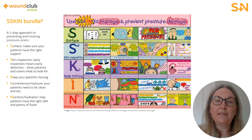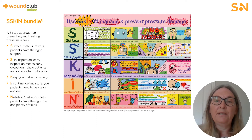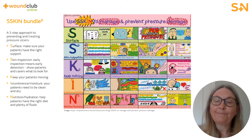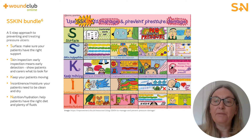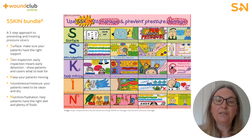The S-SKIN model has a five-element approach to countering the risks of likely pressure ulcer damage. These are: Surface, Skin inspection, Keep moving, Incontinence and moisture, and Nutrition and hydration.